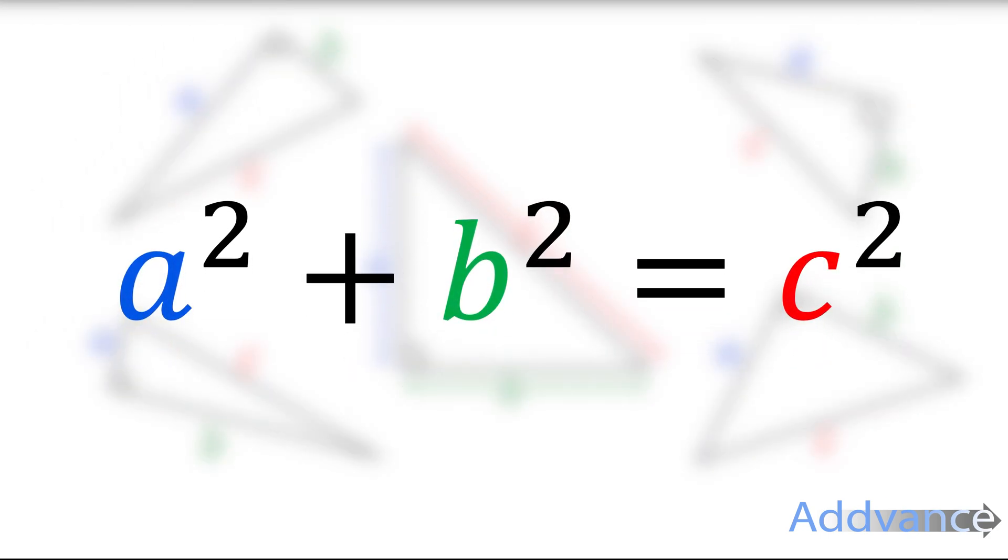Now Pythagoras' Theorem tells us that A squared plus B squared is equal to C squared. That means that the length of A squared plus the length of B squared is equal to the length of C squared. That is a really famous equation in mathematics, and it's true for every single right angle triangle, and we can use it for a lot of problems in mathematics.